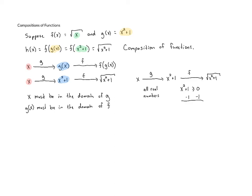If we subtract one from both sides, that gives us x squared is greater than or equal to negative one. And we know that this is always going to be true, because when you take a number and square it, the result is either positive or zero, and all positive numbers as well as zero are greater than negative one. This is always true, no matter what x is. So because we don't have any problems with our first domain or our second, the domain of our composition of functions is going to be all real numbers. For h of x, our function is the square root of x squared plus one, and the domain — in set builder notation — is the set of numbers x such that x is a real number.